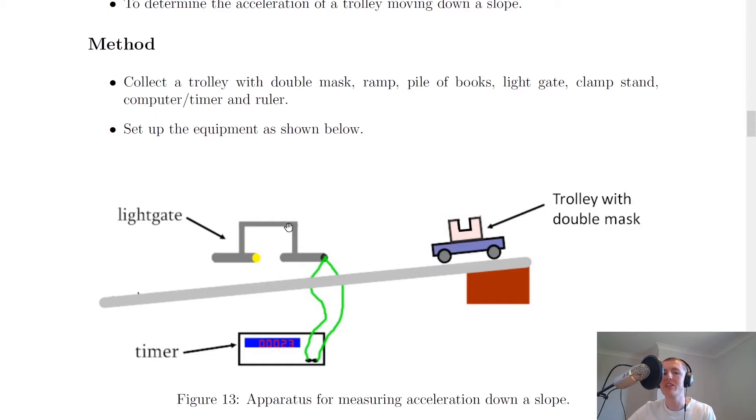A light gate over here, a clamp stand to hold the light gate – we've not shown that in the picture – and a computer timer, so this thing over here. You might use a TSA timer in class, and a ruler as well to measure the length of the masks on the trolley. You then want to set up your apparatus as shown in the picture. Notice that we're only using one light gate in this one because we've got a double mask.